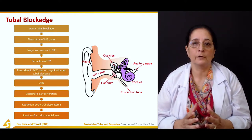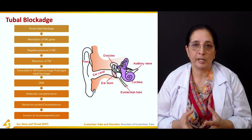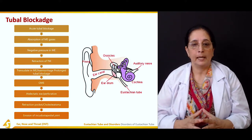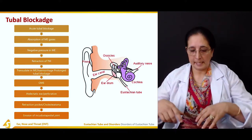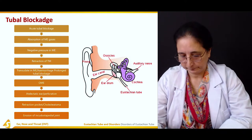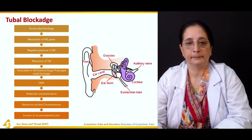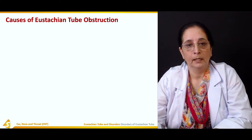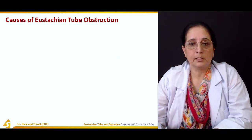With the obstruction or blockage of the Eustachian tube, all these changes can occur, leading finally to erosion of the incus and stapedius, formation of retraction pockets, cholesteatoma, and negative pressure in the middle ear.